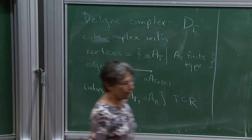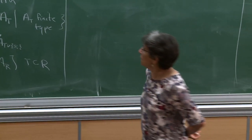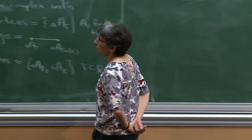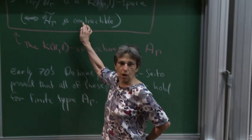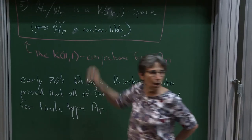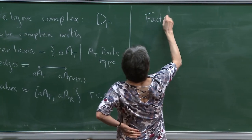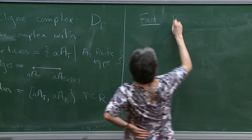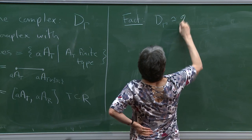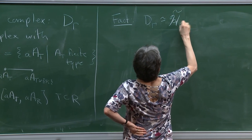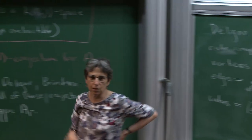So that's what the Deligne complex is, and we're interested in it because originally we introduced it to try to prove that D(γ) is homotopy equivalent to the universal cover of the hyperplane complement — which we would like to prove is contractible.